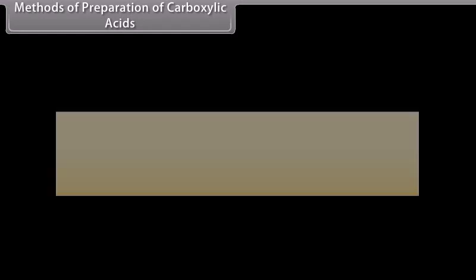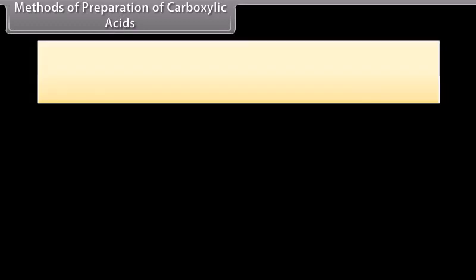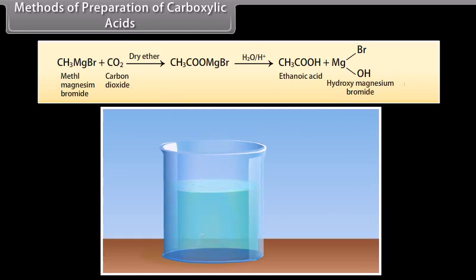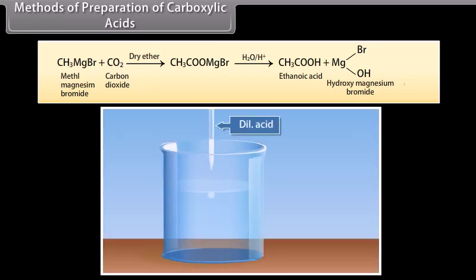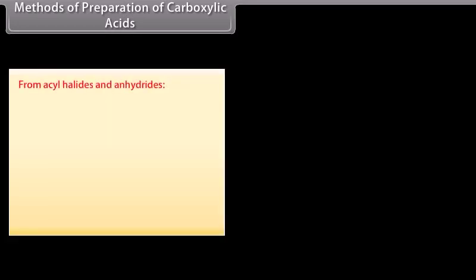From Grignard reagents: Grignard reagents, when treated with carbon dioxide in the presence of dry ether, form salts of carboxylic acids, which in turn give carboxylic acids after acidification. Methyl magnesium bromide reacts with carbon dioxide in the presence of dry ether to form a salt of carboxylic acid, which forms ethanoic acid and hydroxy magnesium bromide after acidification. From acyl halides and anhydrides: the hydrolysis of acid chlorides produces carboxylic acids. On hydrolysis of acetyl chloride, it produces acetic acid.